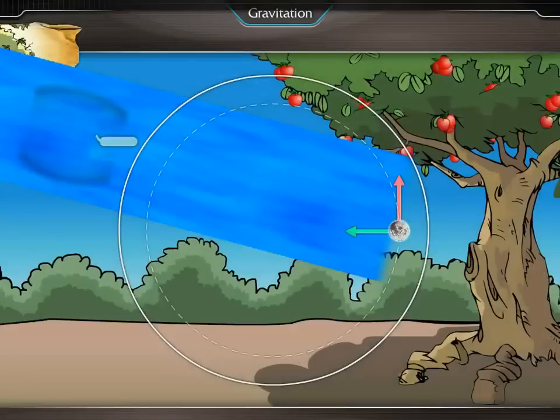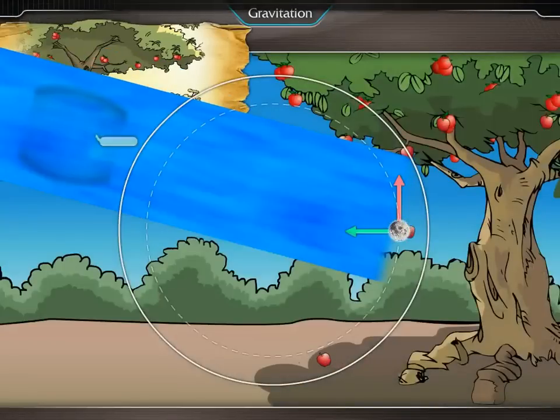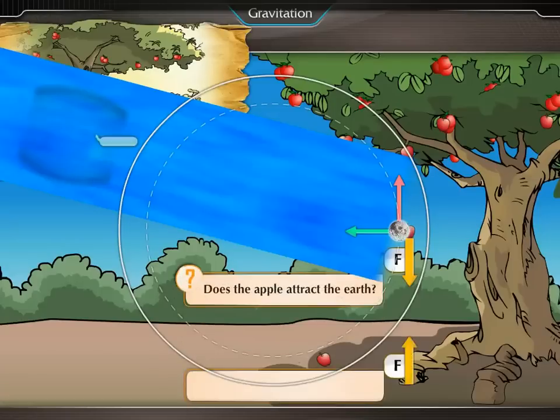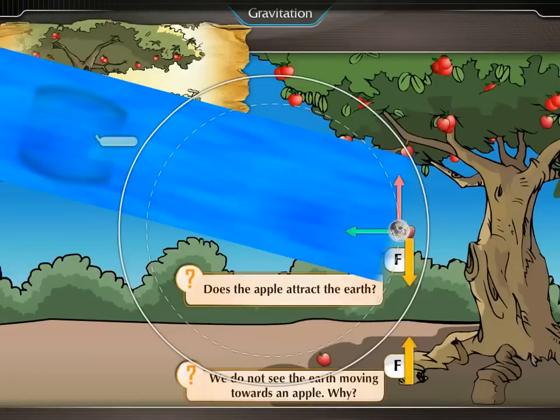It is seen that a falling apple is attracted towards the earth. Does the apple attract the earth? If so, we do not see the earth moving towards an apple. Why?